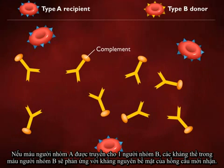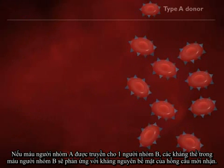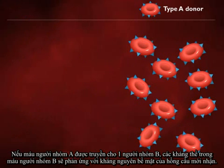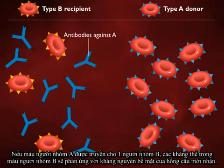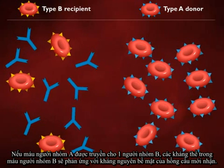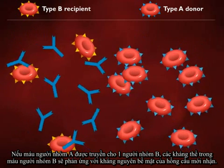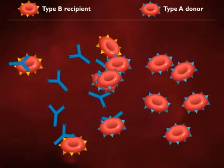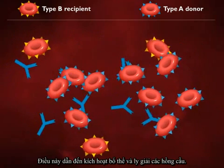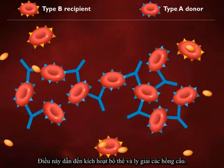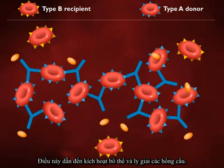If blood from a person who is type A is transfused into a person who is type B, antibodies present in the type B blood react with the surface antigens on the incoming red blood cells. This also leads to complement fixation and cell lysis.